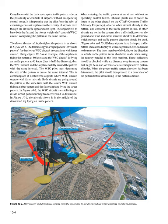When entering the traffic pattern at an airport without an operating control tower, inbound pilots are expected to listen to other aircraft on the CTAF, Common Traffic Advisory Frequency, observe other aircraft already in the pattern, and conform to the traffic pattern in use. If other aircraft are not in the pattern, traffic indicators on the ground and wind indicators must be checked to determine which runway and traffic pattern direction should be used. Many airports have L-shaped traffic pattern indicators displayed with a segmented circle adjacent to the runway. The short member of the L shows the direction in which traffic pattern turns should be made. These indicators should be checked while at a distance from any pattern in use, or while at a safe height above pattern altitudes. When the proper traffic pattern direction has been determined, the pilot should proceed to a point clear of the pattern before descending to pattern altitude.